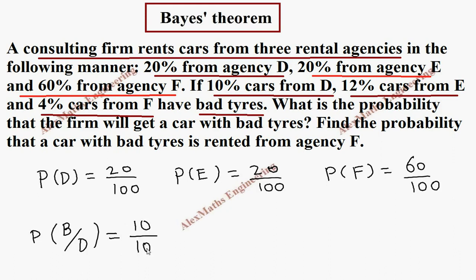In the same way, from agency E, bad tire is 12%, so 12 by 100. Then P of B given F—from agency F the bad tires probability is 4 by 100. So whatever value is given is listed here.